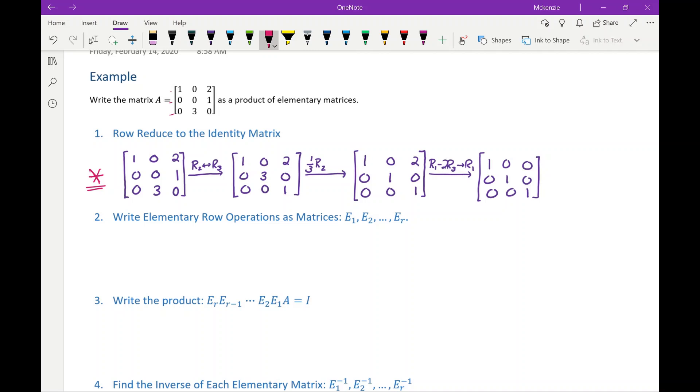So then our next step is to write each one of these elementary row operations as an elementary matrix. So for this example, writing our elementary row operations as matrices, we get E1, E2, and E3. So R in this case is 3. So E1 would be the elementary matrix obtained by swapping the second and third rows of the identity matrix. So the first row remains unchanged, the second row is replaced with the third, and the third row is replaced with the second.